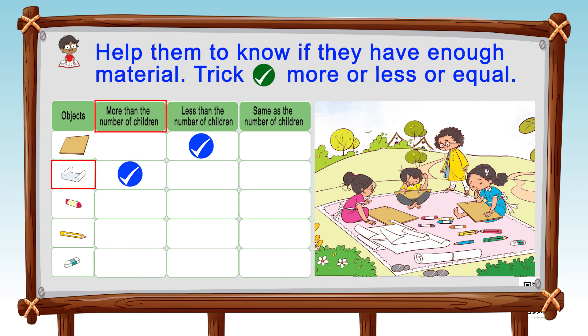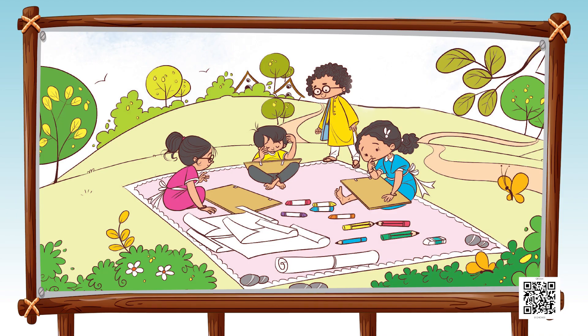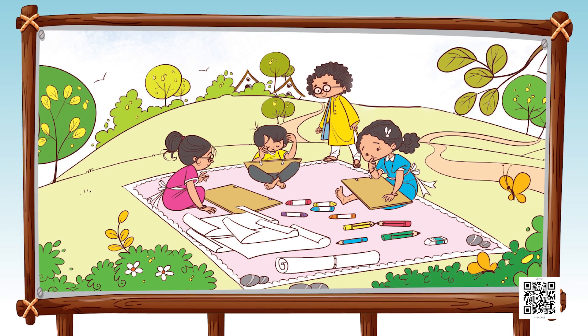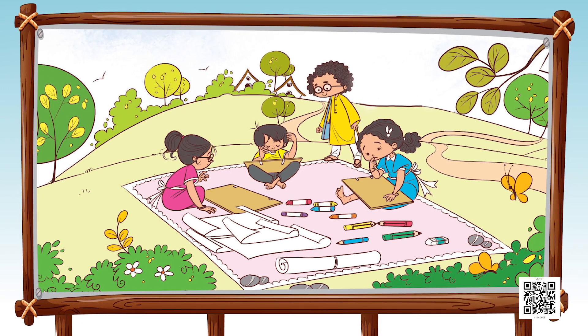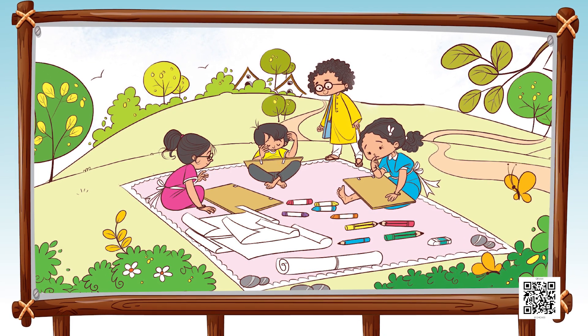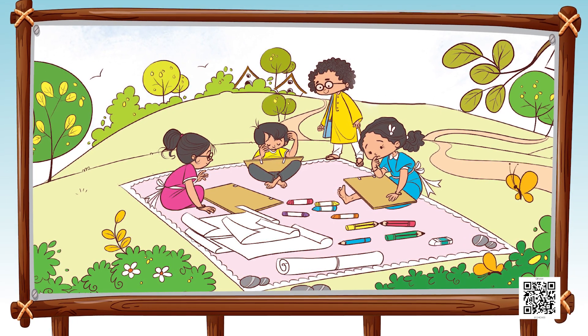Our third object is a crayon. Now let's see how many crayons we have. Let's count them and accordingly tick if it's less than, same as, or more than the number of children.